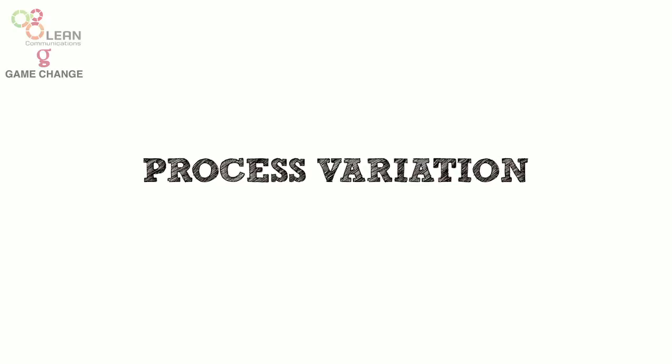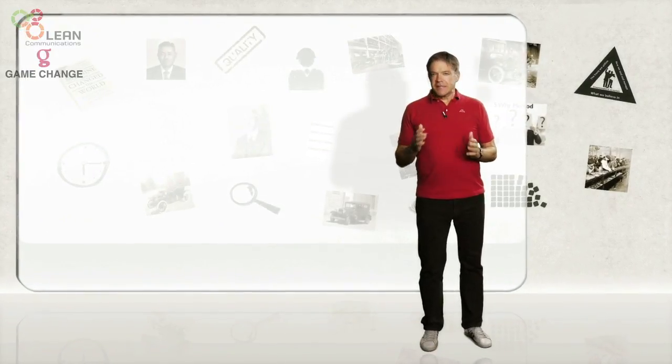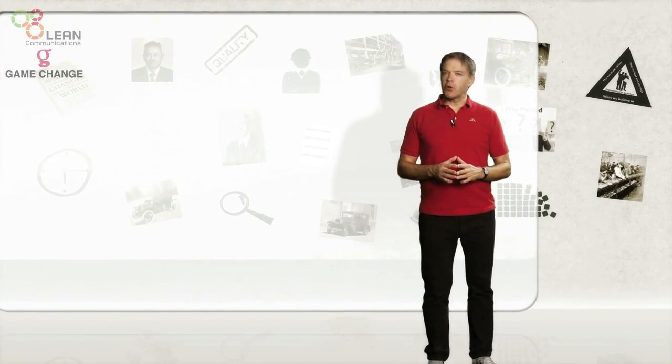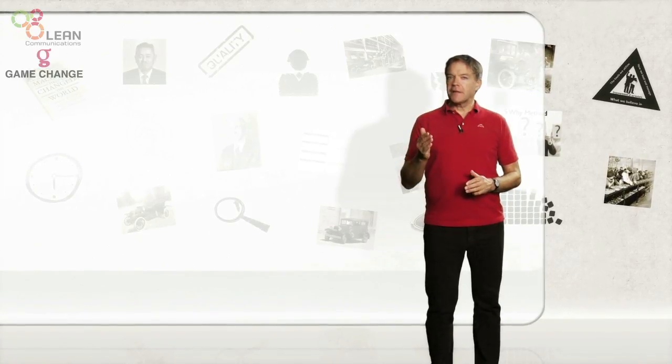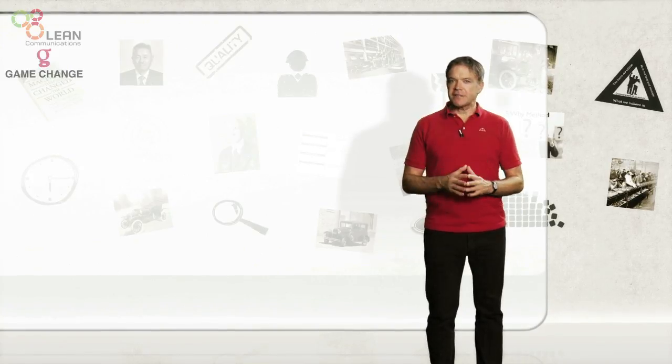At the heart of Six Sigma is the principle of variation. Six Sigma assumes that everything is a result of some process. Therefore, if your product quality varies, then this is the result of variation in the process that creates that product.